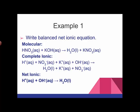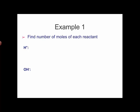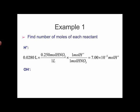The next thing we want to do is figure out how many moles of each reactant we have. Well, we're given the volume and we're given the concentration. And remember, if you multiply the volume in liters times the concentration, you get moles. So 0.0280 liters times the concentration, 0.250 moles per liter, 1 mole of H-plus per mole of HNO3.